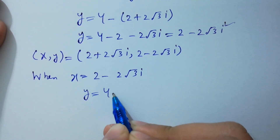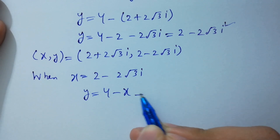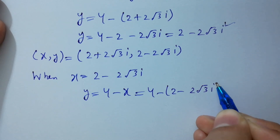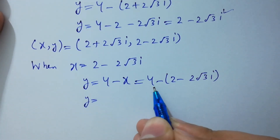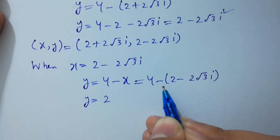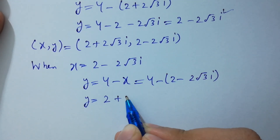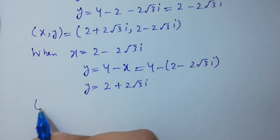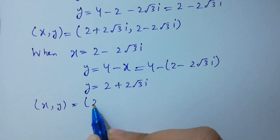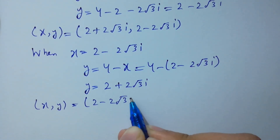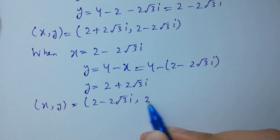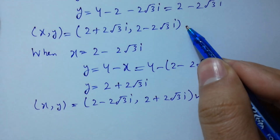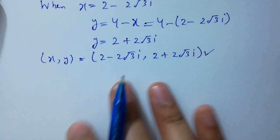When x equal to 2 minus 2 square root of 3 i, then y equal to 4 minus x, so y equal to 4 minus (2 minus 2 square root of 3 i), giving y equal to 2 plus 2 square root of 3 i. So the values of x and y are: x equal to 2 minus 2 square root of 3 i and y equal to 2 plus 2 square root of 3 i.